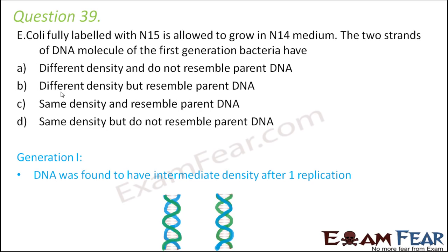If you recall the Meselson-Stahl experiment, in the F1 generation it was found that one strand was made up of N14 and the other strand was N15, making it of intermediate density. Its density was not the same as the parent DNA. It was neither the density of N14 nor N15, but intermediate density with one strand N14 and one strand N15. The answer is different density but resembled parent DNA.